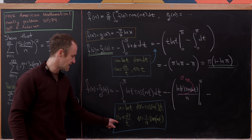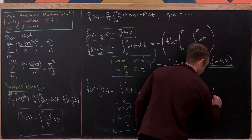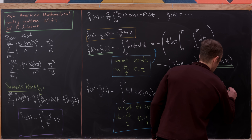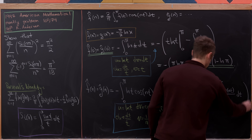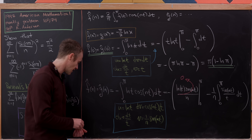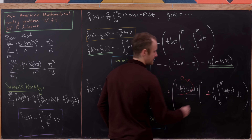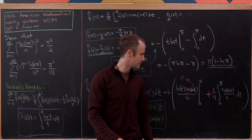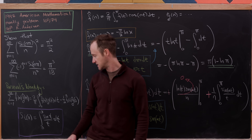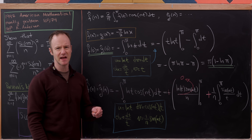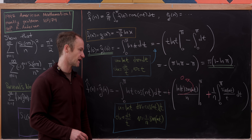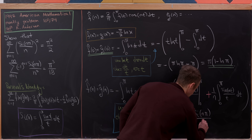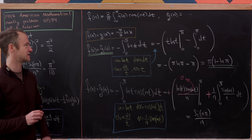Then we have minus the integral of v du, which is (1/n) times the integral from 0 to π of sin(nt)/t dt. The minus signs cancel, and this integral — after a simple substitution, left as a homework exercise — reduces to Si(nπ)/n. So f̂(n) = ĝ(n) = Si(nπ)/n.